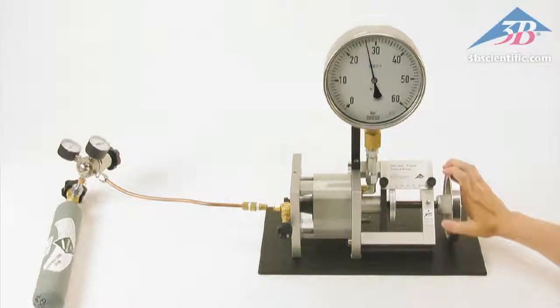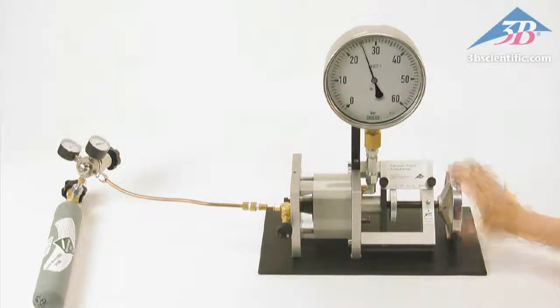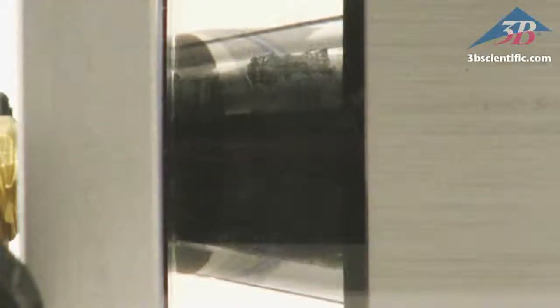Once the critical pressure has been reached, return the hand wheel to its original position. Notice the bubbles that appear in the liquid as it begins to return to a gas.